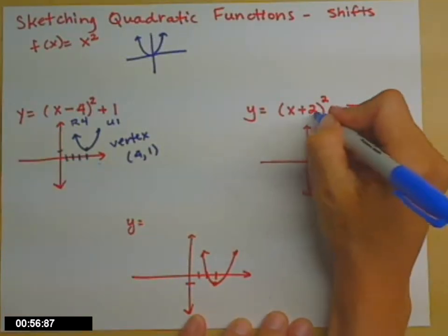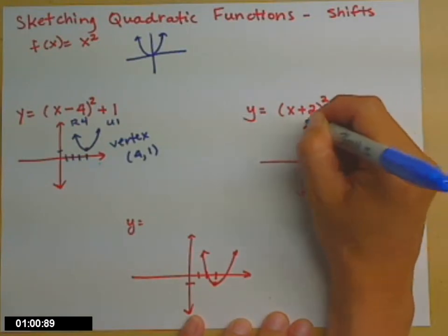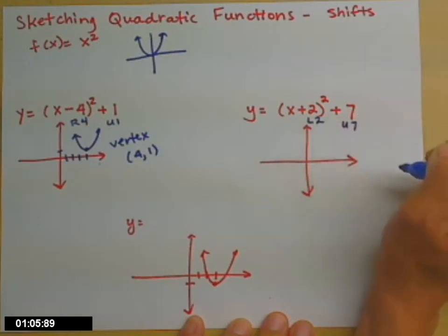The second example: plus 2 inside with the x before it gets squared. Plus on the inside moves us left. Plus on the outside moves us up.